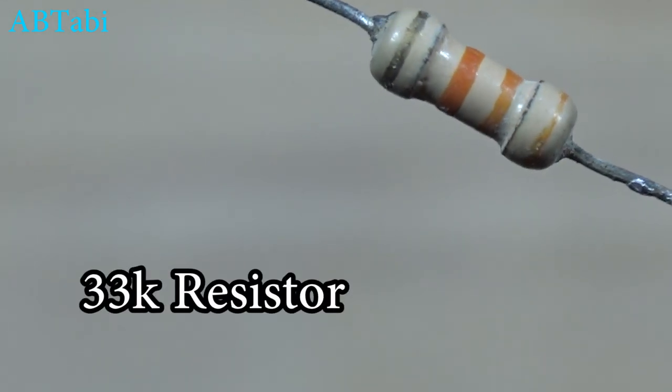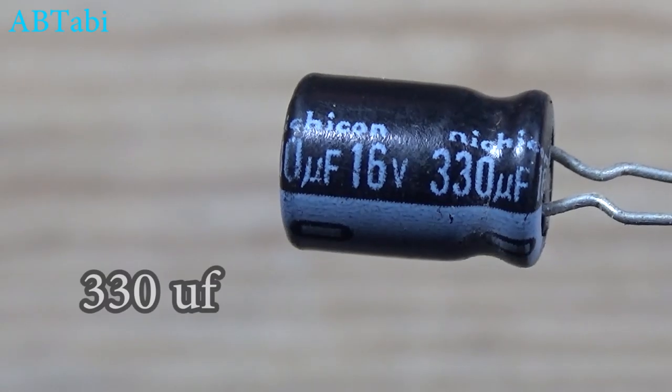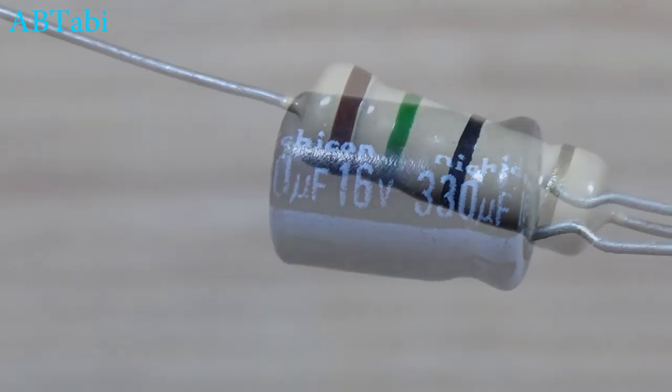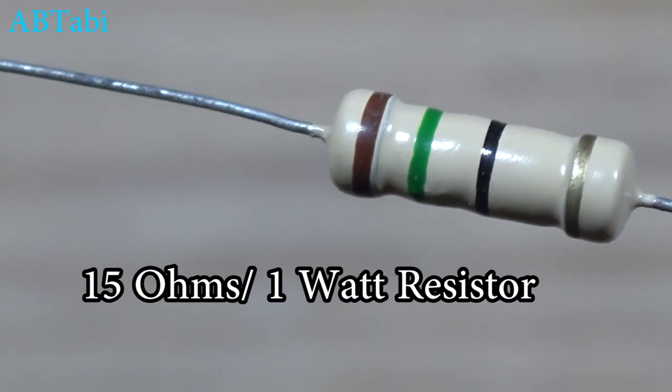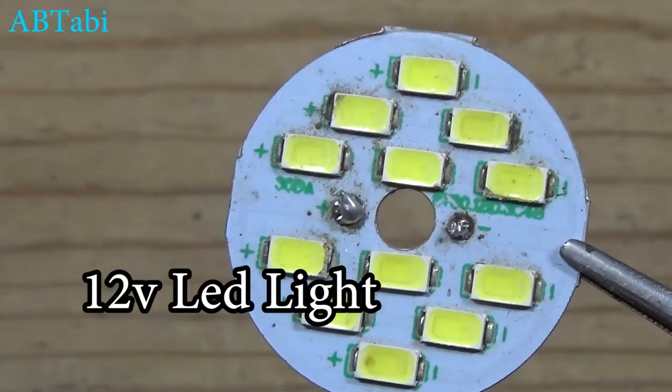33k resistor, 330 uF capacitor, 15 ohms 1 watt resistor, LED light strip, on off switch, and a 12 volt battery.